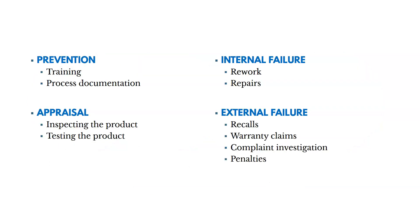Here are a few types of each category. Prevention — ensuring a quality product, often before production — includes training and process documentation, things that make sure we do it right the first time. Appraisal, as the project is underway, includes inspecting and testing the product. Internal failures, identified by the project team before reaching the customer, include rework and repairs. External failures, found by the customer, include recall costs, warranty claims, complaint investigations, and other penalties. We'll talk more about cost of quality in the quality chapter.